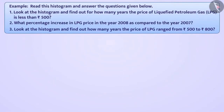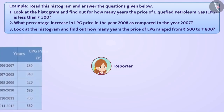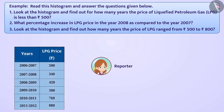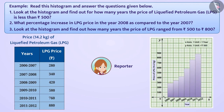Next example: Shruti is a reporter. To publish news in the newspaper, Shruti studied the change in the price of 14.2 kilograms of liquefied petroleum gas, that is LPG, from the year 2006 to 2012. The information received was represented as a histogram and printed in the newspaper. Now read this histogram and answer the questions below.